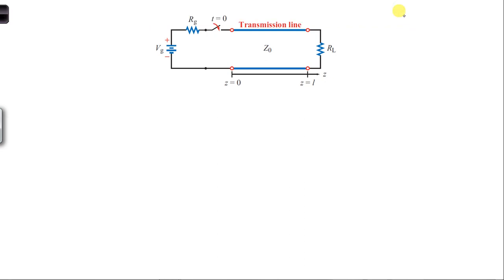In part D, we have a shunt resistor, a resistor extending between the two conductors at Z equals L over 4. And we want to plot the voltage at Z equals 0 versus time for up to 0.5 microseconds.